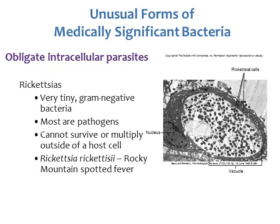Other types of unusual forms are medically significant bacteria called obligate intracellular parasites. Obligate means they have to have something; intracellular means they live inside other cells; and they're parasites, so they cause damage or disease to the cell they're living in. One obligate intracellular parasite is Rickettsia — a very, very tiny, gram-negative bacteria. Most species of Rickettsia are pathogens that cause disease or damage to the host cell.